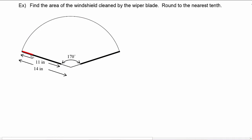However, the blade only goes here, so that means this part does not get cleaned by the wiper blade. So we have to subtract that from the area of the entire sector. So our plan of action here is the area that's shaded will be the area of the big sector minus the area of the small sector.